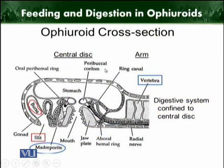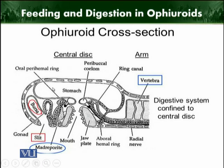This is the ophiuroid cross-section. These are the arms, this is the central disk, this is the madreporite, and this is the bursa oral perihemal ring. This is the mouth through which captured food enters into the jaw plate. The jaw acts upon the food, breaks it down, chews it, and pushes it into the stomach, where digestion of food takes place. In ophiuroids, the digestive system is confined only to the central disk.